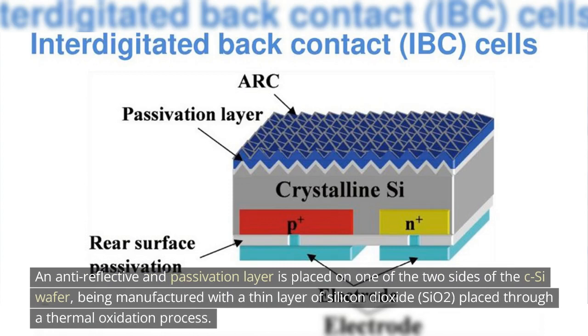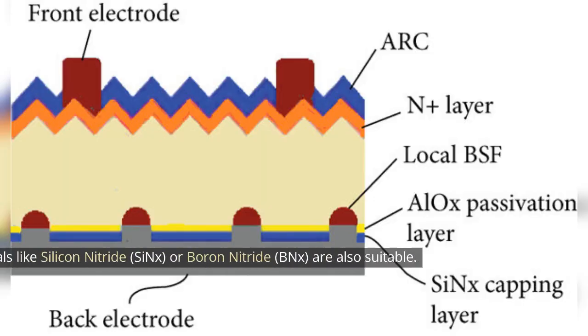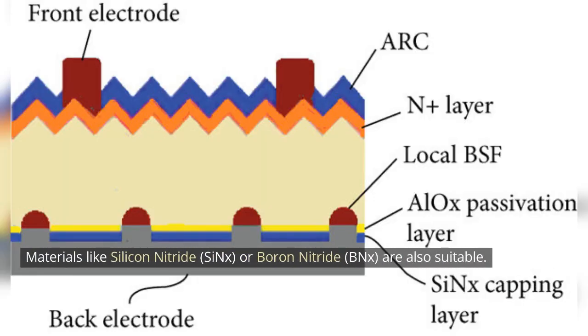An anti-reflective and passivation layer is placed on one of the two sides of the c-Si wafer, being manufactured with a thin layer of silicon dioxide, SiO2, placed through a thermal oxidation process. Materials like silicon nitride, SiNx, or boron nitride, BNx, are also suitable.